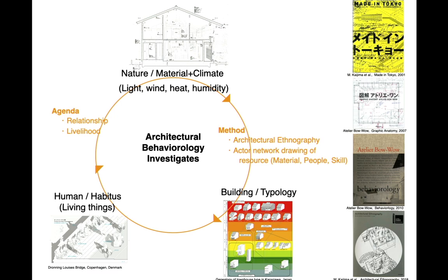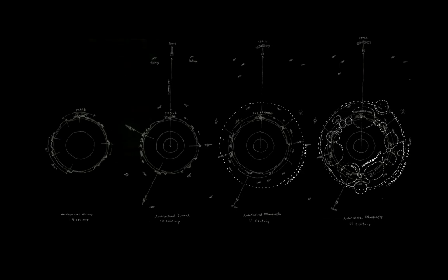We try to observe architectural form as the intersection of three behaviors: climate, material, people, and living creatures like plants, as well as building typology. Over the centuries, the value of things has shifted from placeability to the inter-exchangeability of time and space.